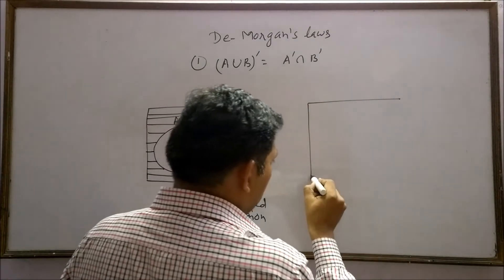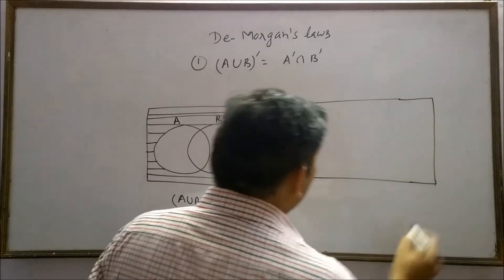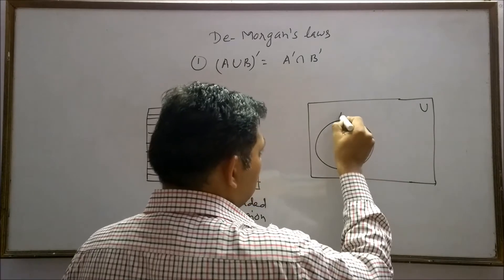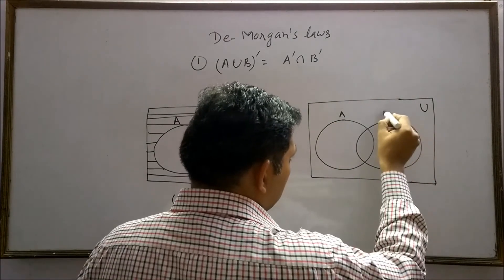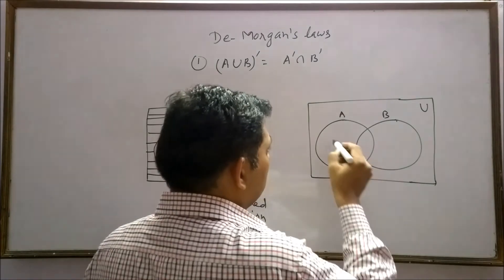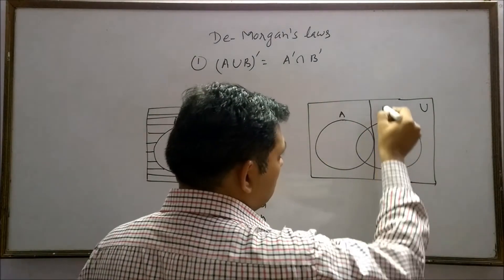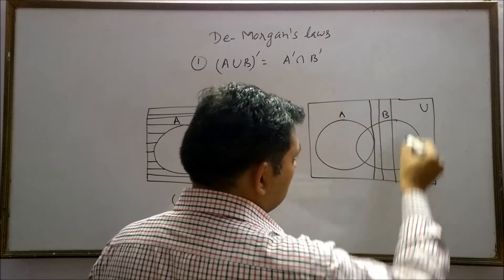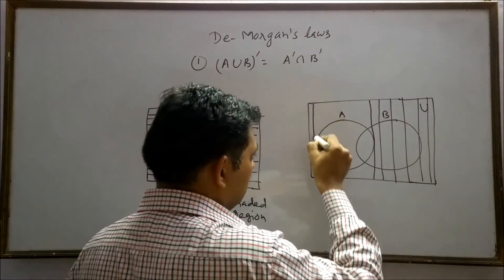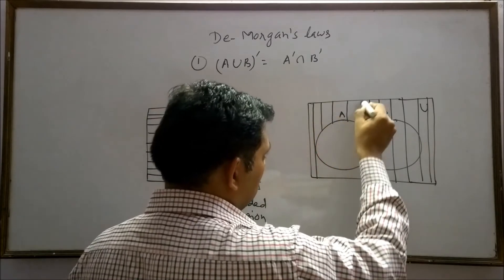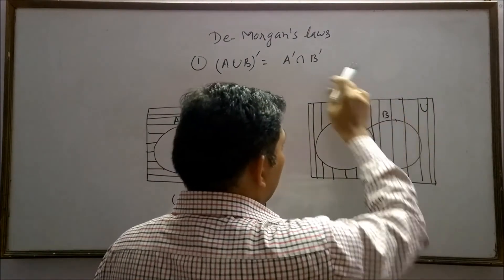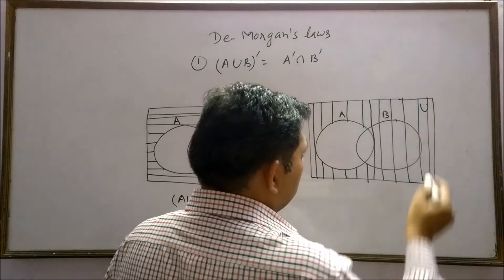Now we will try to draw the Venn Diagram for A complement intersection B complement. A complement means the region except A. And this is set B.